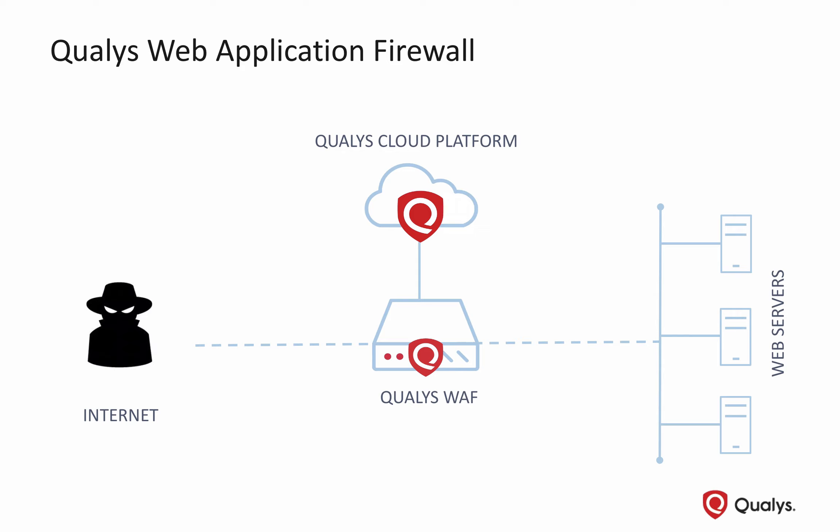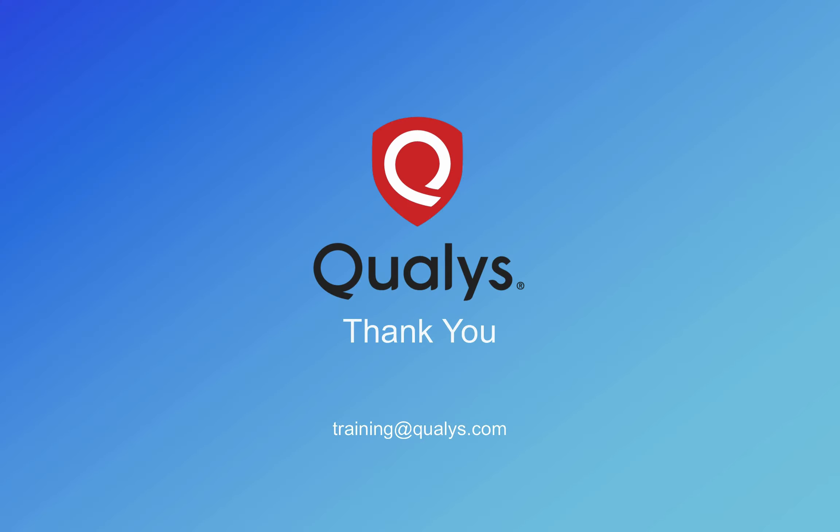Qualys WAF can address custom needs with simple, customizable, and reusable policies. The out-of-the-box policies are designed for popular platforms such as WordPress, Joomla, Drupal, Outlook Web Application, and SharePoint. It also includes generic templates for unknown applications and frameworks. Thank you for watching this video on Qualys Web Application Firewall.